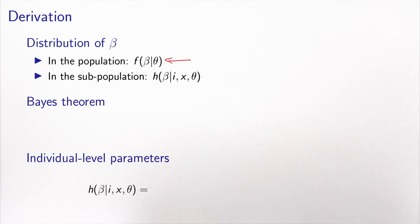Now, let's take a specific individual, and this individual has a configuration i,x, so we have observed this individual, we have observed the choice, and we have observed also the explanatory variables x, so it is in the sample. Now what I would like to know is what is the distribution of people like this? And I will denote this distribution by h. So h of beta, conditional to i,x and theta, is the distribution of beta for people with a configuration i and x.